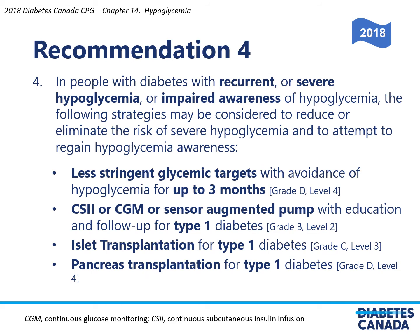Recommendation 4: In people with diabetes with recurrent or severe hypoglycemia or impaired awareness of hypoglycemia, the following strategies may be considered: less stringent glycemic targets with avoidance of hypoglycemia for up to three months; continuous subcutaneous insulin infusion or continuous glucose monitoring or sensor-augmented pump with education and follow-up for type 1 diabetes; and islet transplantation or pancreas transplantation for type 1 diabetes.